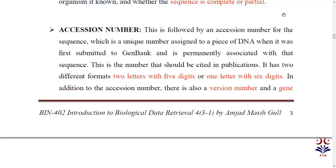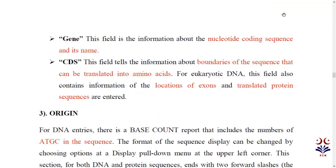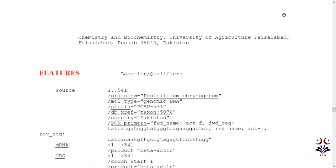Then the version number is available. The accession number is assigned, but the sequence can be updated and published multiple times — the version number tracks this. Then the gene identification number (GI number) is located in the header as well.